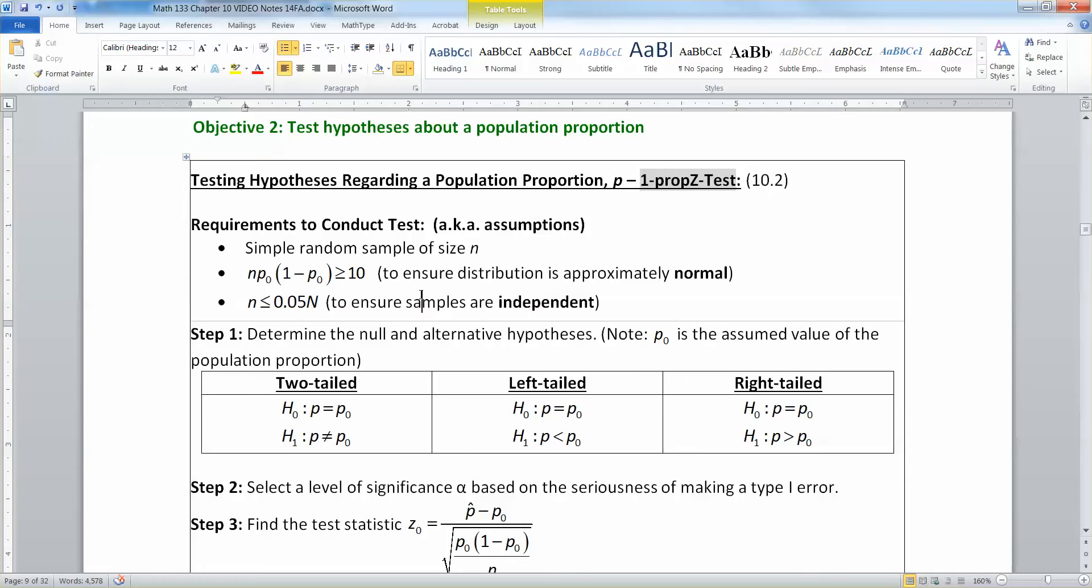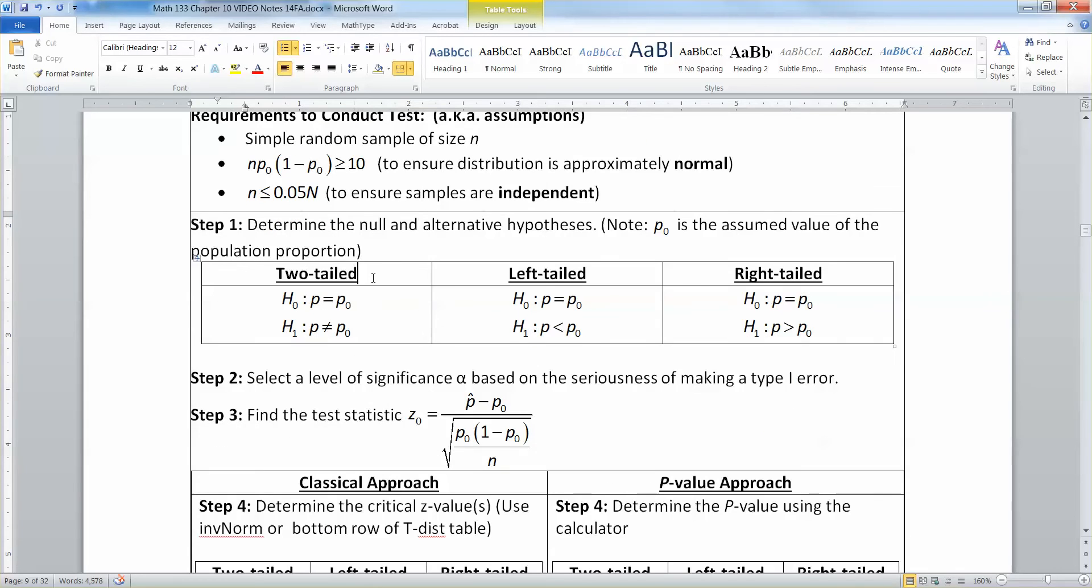Now, determine the null and alternative hypotheses. Note that p0 is the assumed value of the population proportion. So, you have either a two-tailed that has a not equal, a left-tailed, or a right-tailed. We've practiced writing those in section 10.1. Notice, by the way, that the null hypothesis always has equal sign in it. Always.